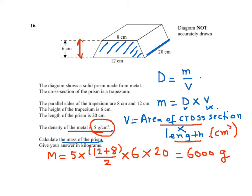So M equals 6000 grams and we know that 1 kilogram is 1000 grams. Therefore the mass is 6 kilograms. Thank you.